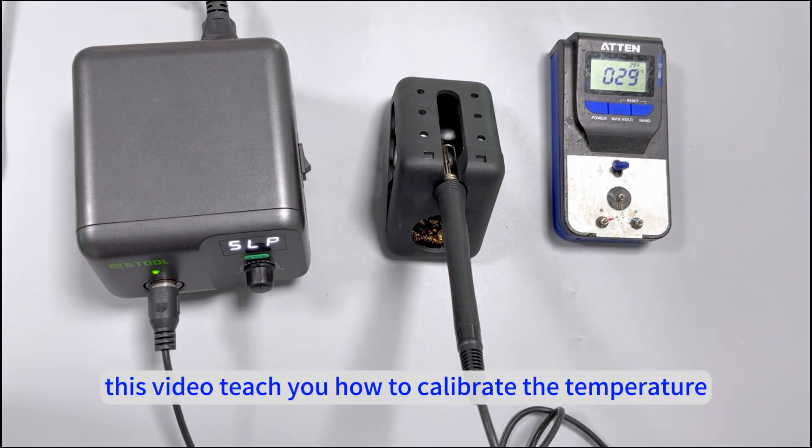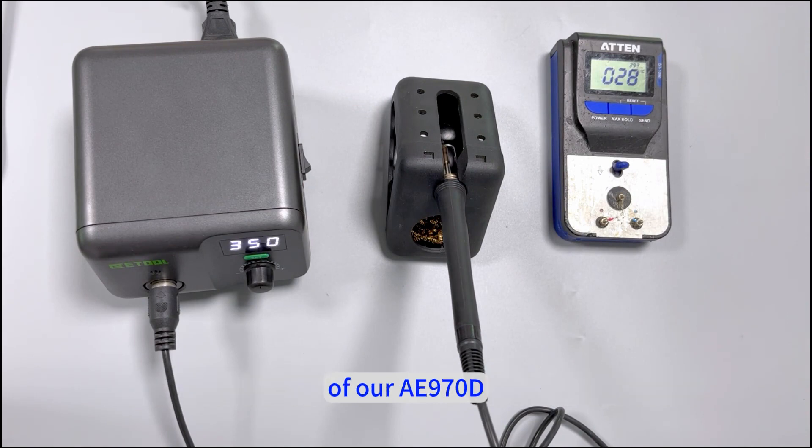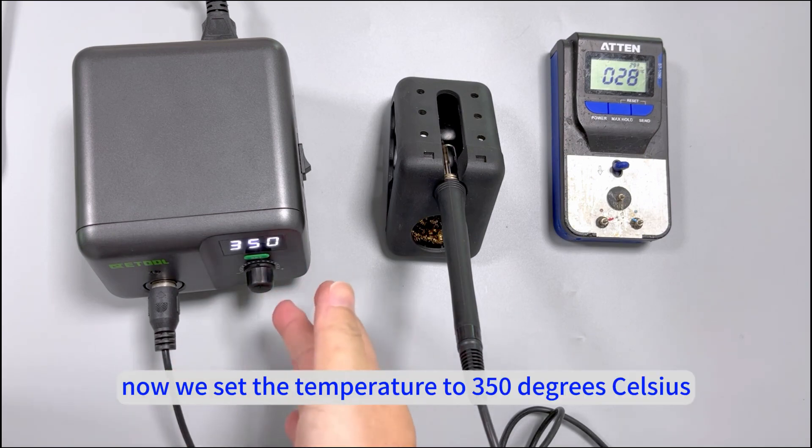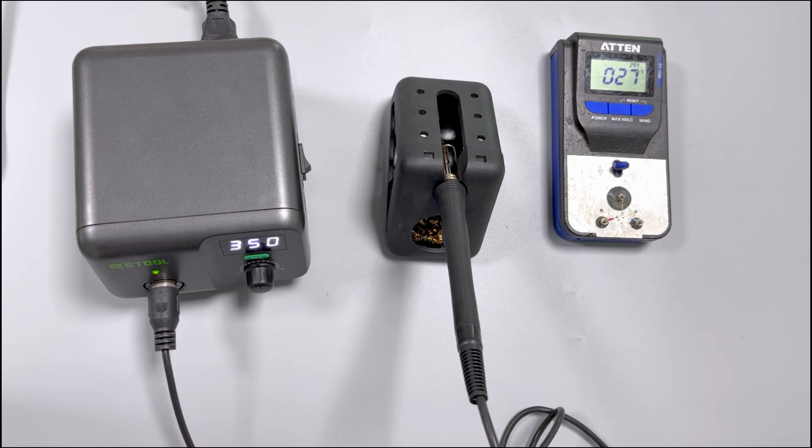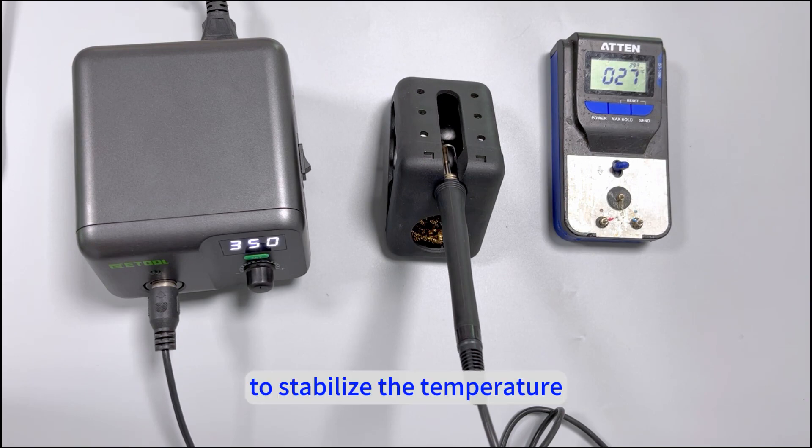This video teaches you how to calibrate the temperature of our AE970D soldering station. Now we set the temperature to 350 degrees Celsius and then wait for one to two minutes to stabilize the temperature.